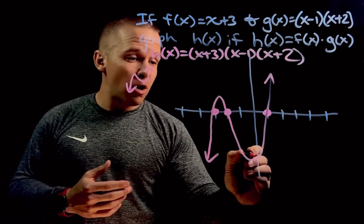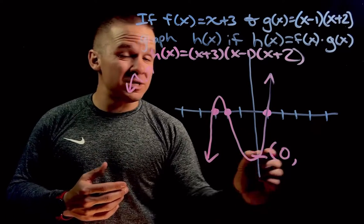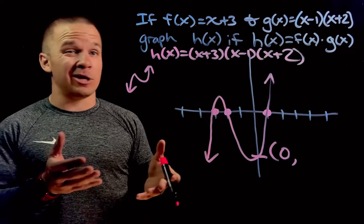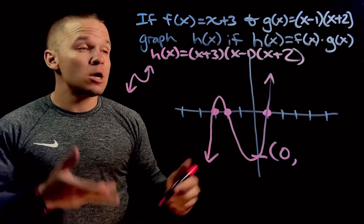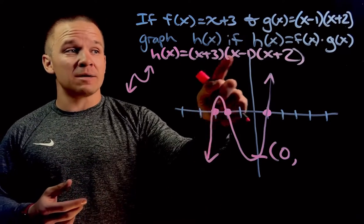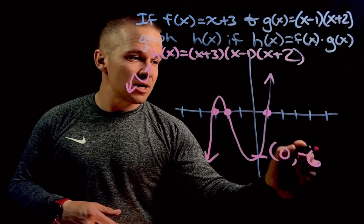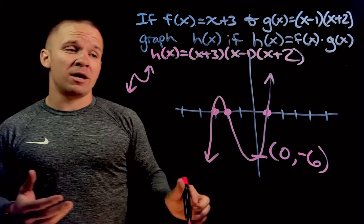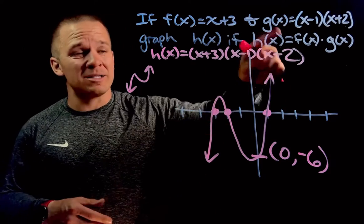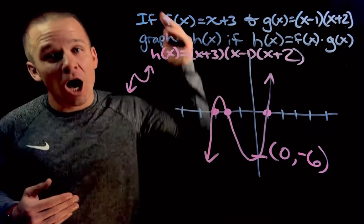Now we also usually ask for our y intercept. What would that be? Well it'd be 0 comma something because my x values are going to be 0 on the y axis. So if I plug in 0, I get 3 times negative 1 is negative 3 times 2 is negative 6. I get 0, negative 6 for my y intercept. I've got my x intercepts. It's a positive cubic. That is awesome sauce.